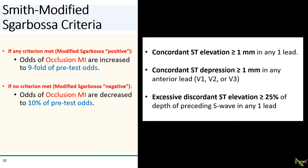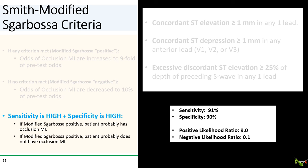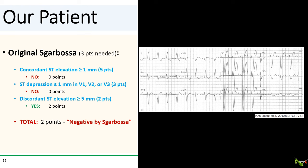How good are the modified Sgarbossa criteria? If any of the three criteria are met, the odds of your patient having a STEMI equivalent occlusion MI is increased by ninefold. And if none of the criteria are met, the odds of having a STEMI equivalent occlusion MI is decreased by 90%. The sensitivity and specificity are both 90% or more.